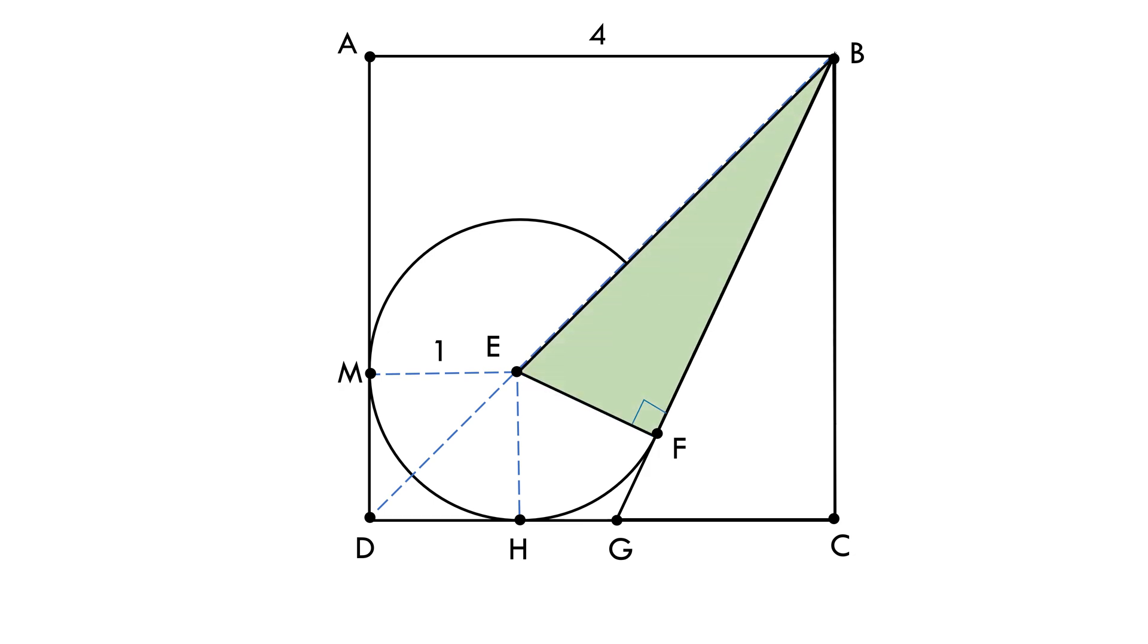Now in this triangle BEF, EF is equal to 1 unit being the radius of the circle. Now is there a way we can find other dimension of this triangle? Yes we can find BE. We can find BE by subtracting DE from DB.